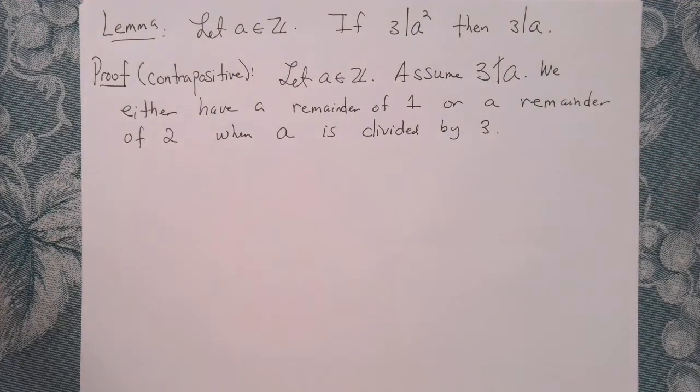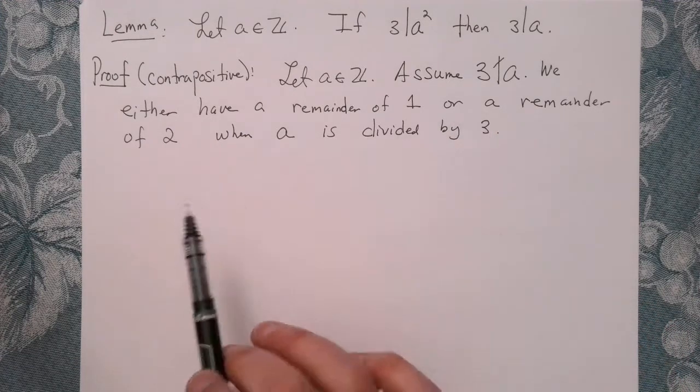So we either have a remainder of 1 or a remainder of 2 when A is divided by 3. And again, that makes sense, right? So if 3 doesn't divide A, there's either a remainder of 1 or a remainder of 2. If 3 did divide A, there would be a remainder of 0.